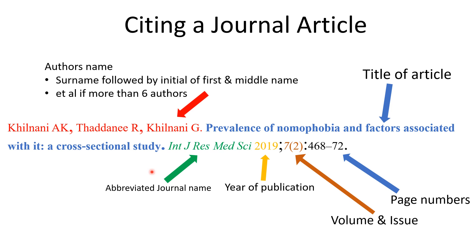The second important point is punctuation marks. In the author's name, each author is separated by a comma, and after the last author there is a full stop. After the title of the article, there is also a full stop. Then the journal name is followed by the year of publication — importantly, there is no punctuation mark between the journal name and the year. After the year of publication comes a semicolon, then the volume and issue, followed by a colon. After the page numbers, there is a final full stop.